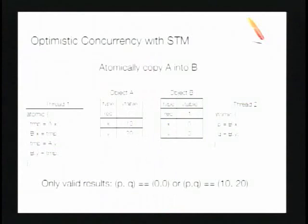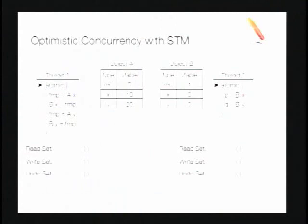Suppose we have a concurrent thread 2 that's going to read B, and both are executing at the same time. If we get the semantics right, there are only two valid results: either thread 2 appears to execute first and reads values 0, 0, or thread 2 appears to execute second and reads values 10, 20. If we see a mix of those two things, we have incorrect, inconsistent behavior. These read, write, and undo sets are maintained per thread, and I'll show how they're built up as we execute.